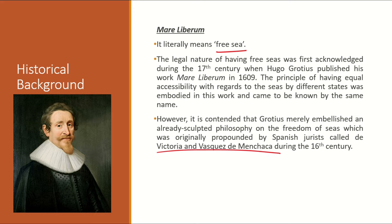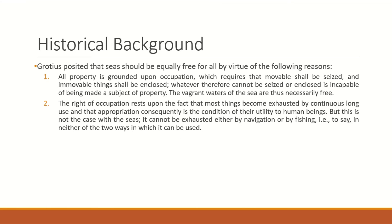Grotius argued that the sea is based on all property, possession or occupation concepts — that immovable property is seized and enclosed. Whatever thing is seized or enclosed cannot be made into private property. Grotius's second contention was regarding the right to occupy or possess, based on the right of exhaustibility — that the sea cannot be exhausted from human usage.